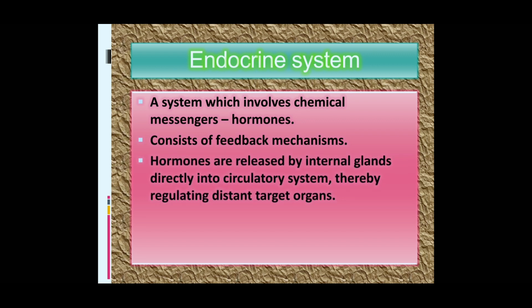Hormones are released by internal glands directly into the circulatory system, thereby regulating distant target organs. Hormones are chemical messengers produced by certain organs or glands within our body. With the help of the circulatory system, these hormones are carried to target organs which may be very distant from the gland.